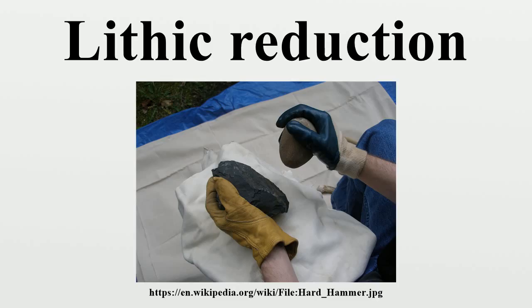Soft hammer percussion involves the use of a billet, usually made of wood, bone, or antler as the percussor. These softer materials are easier to shape than stone hammers and can be made into more precise tools. Soft hammers also deform around the sharp edges of worked stone rather than shattering through them, making them desirable for working tool stone that has already been worked to some degree. Soft hammers do not have as much force behind them as hard hammers do, so flakes produced by soft hammers are generally smaller and thinner.